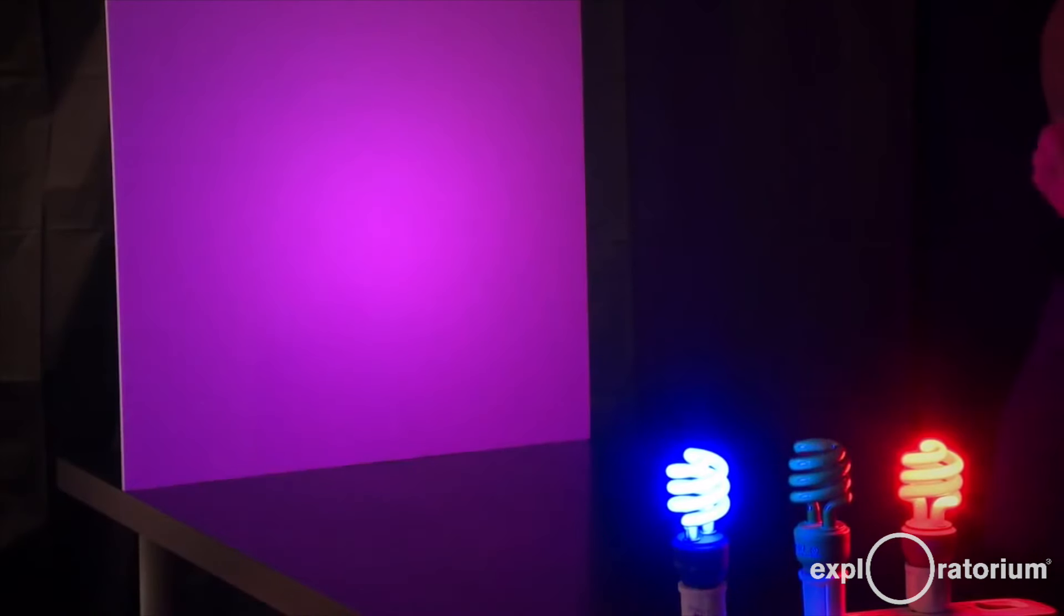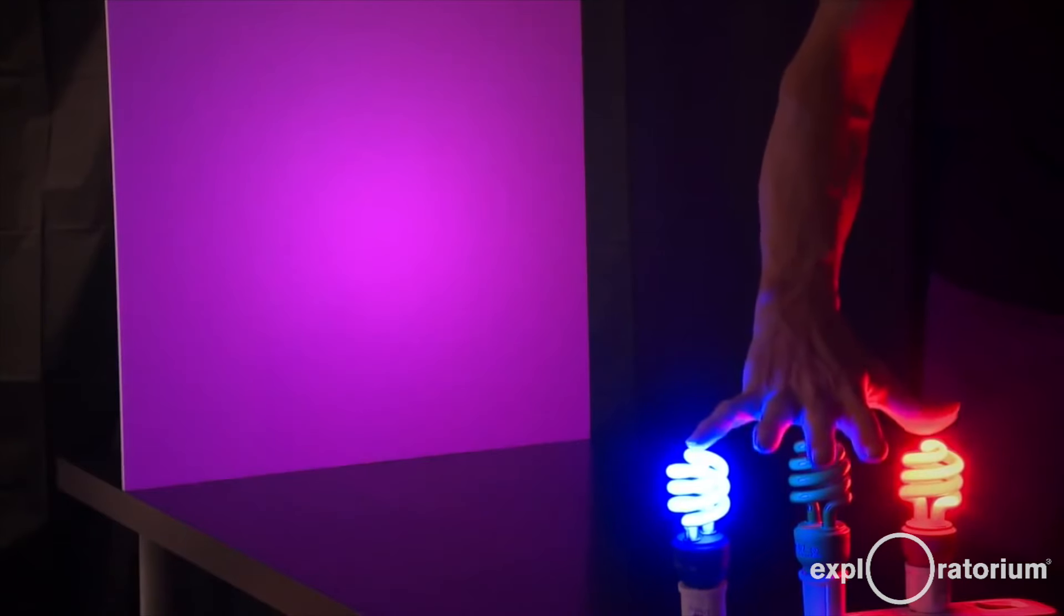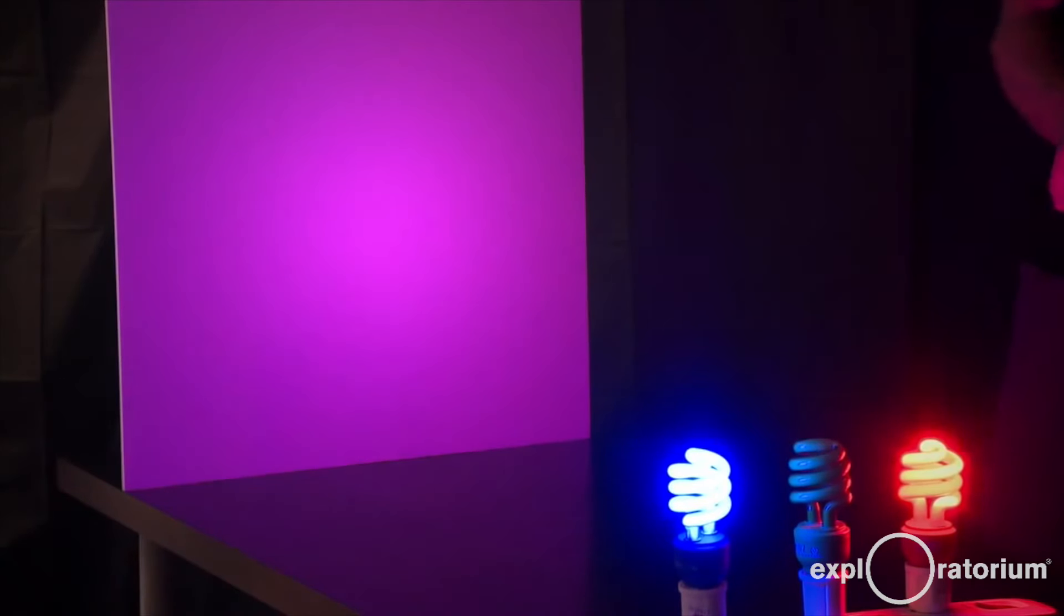I'm going to start by turning off the green light. This leaves a red light separated from a blue light by about 8 inches. That'll be important to understand the shadows.